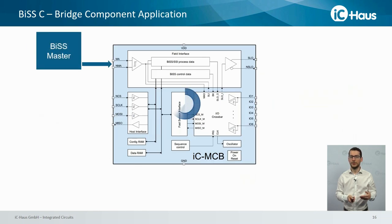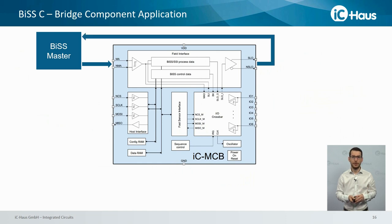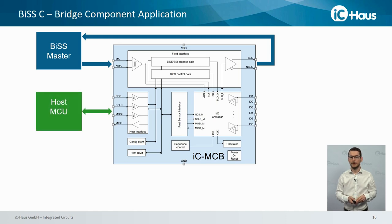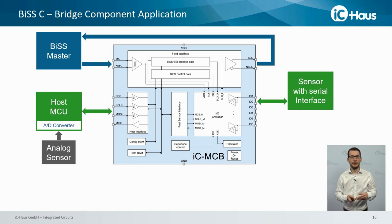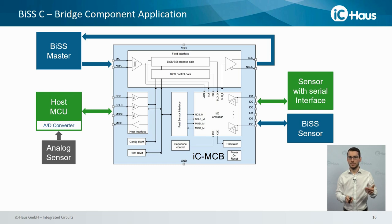In a typical application, a BiSS master requests a new frame. ICMCB processes the sensor data integrated via its various interfaces and returns the BiSS frame to the master. A microcontroller configures ICMCB at startup and integrates additional sensor data using its AD converter. Via the I/O crossbar, ICMCB can act as an SPI master to integrate additional sensor data from sensors with a serial interface. Furthermore, BiSS-C sensors integrated using the single-ended signal can use the RS422 transceivers of ICMCB.